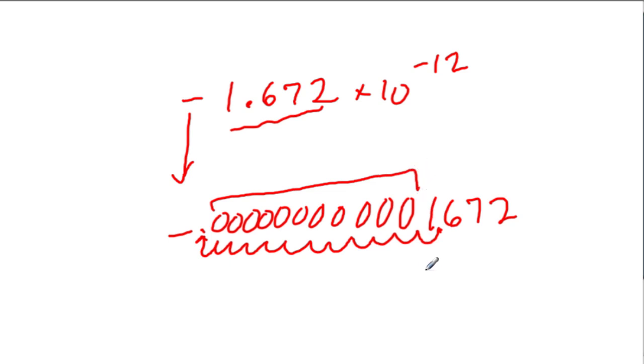Again, there are 11 zeros here. Because you're hopping to the left 12 times, and one of the hops is taken up by the 1. So there are only 11 hops left, and each of those hops will have a zero in it.